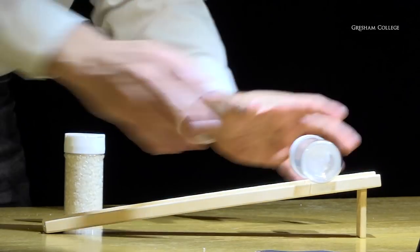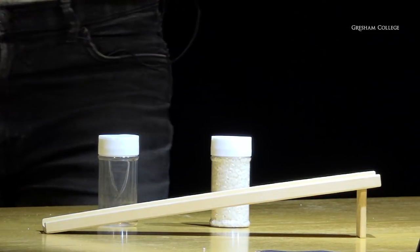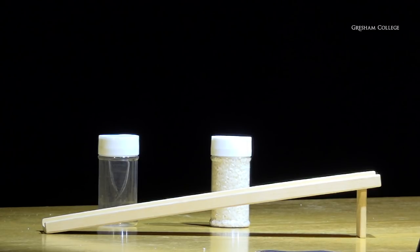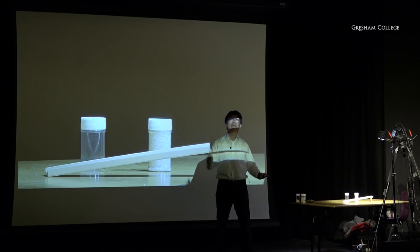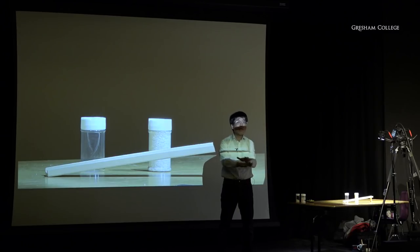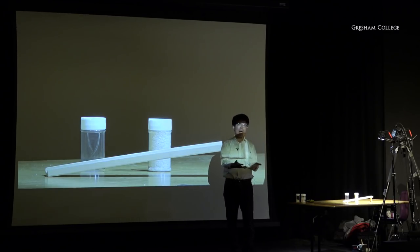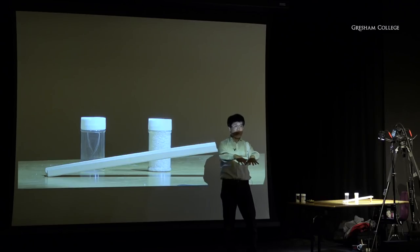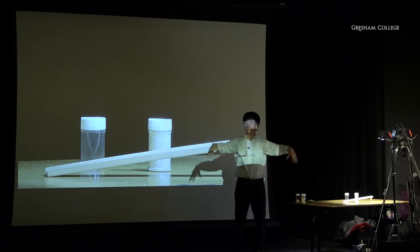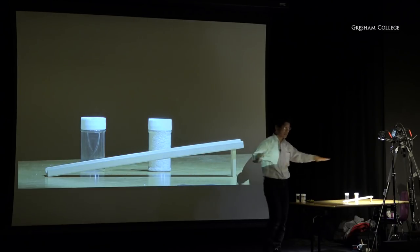We want to plot the rate of descent as a function of how much filling there is. We already have two data points: when the jar is empty, you roll very fast; when it's full, quite fast too — two points at more or less the same height. What happens in between? When the jar is half-empty — or half-full depending on your optimism — will it go faster, slower, or at the same rate?